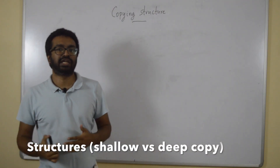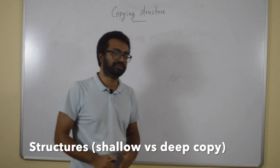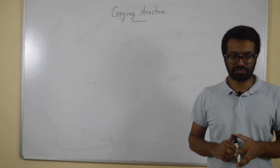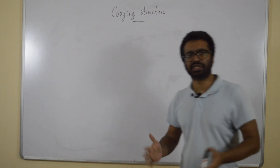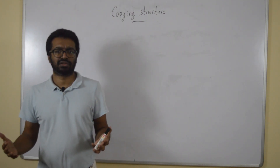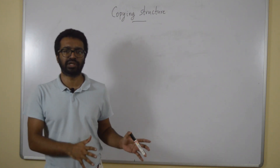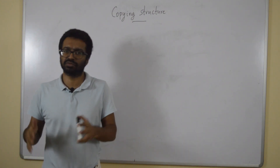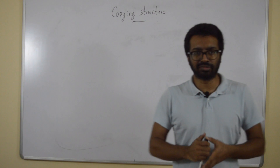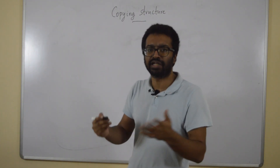How to assign one structure variable to another structure variable? If I have two integers, int x and y, how do I assign the value in x to y? Just write y equal to x. So similarly, let's first write our struct.